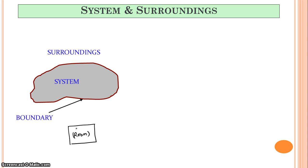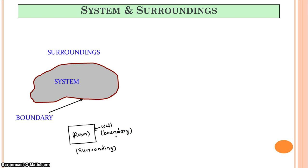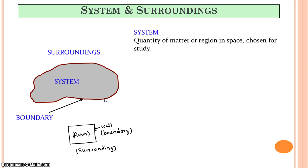Outside the room, there is a surrounding. The walls and windows are separating the system from the surrounding. So basically, a system is a quantity of matter or a region in space chosen for study — for example, a room is your system.